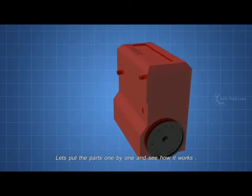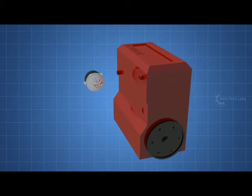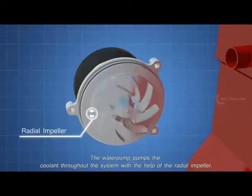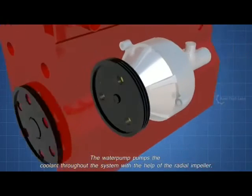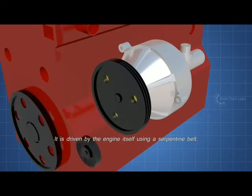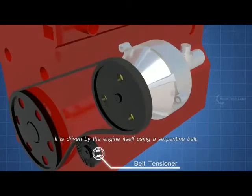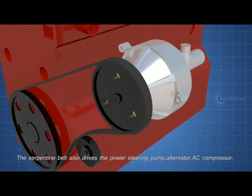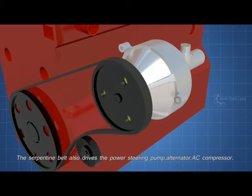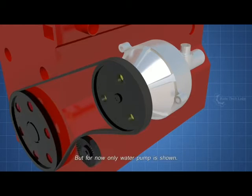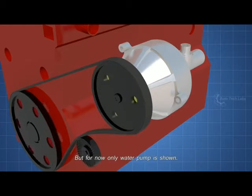Let's put the parts one by one and see how it works. The water pump pumps the coolant throughout the system with the help of the radial impeller. It is driven by the engine itself using a serpentine belt. The serpentine belt also drives the power steering pump, alternator, AC compressor. But for now, only water pump is shown.